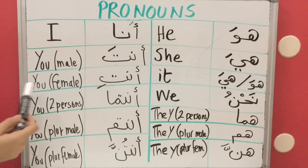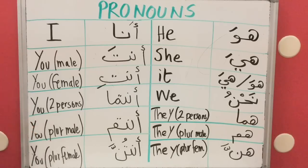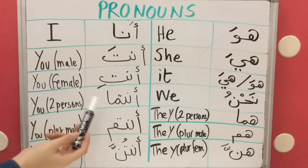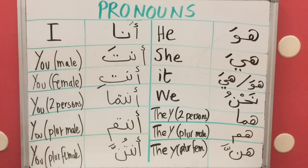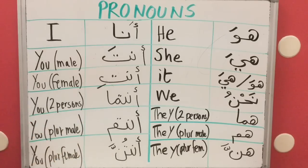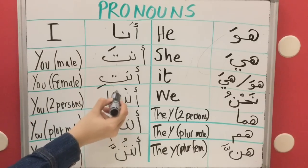Now if you are talking to two people — more than one but exactly two — you say 'Antuma'. And it doesn't matter if they are male or female; it just matters that they are two. You say 'Antuma'.